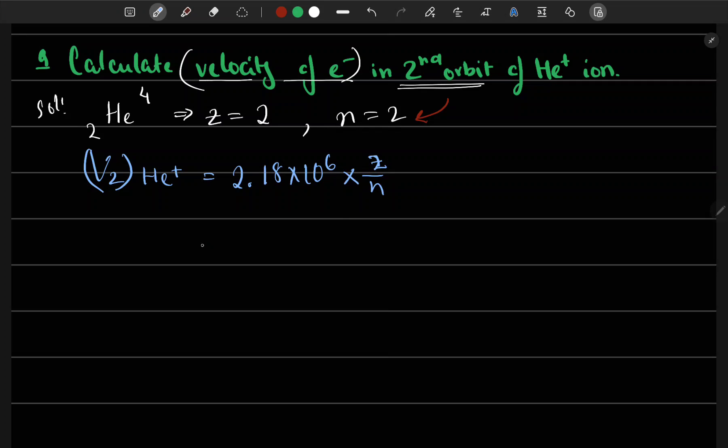So now this is equal to 2.18 into 10 to the power of 6, into Z we have 2 here, and n we have 2, so 2 by 2 is 1. This gives us 2.18 into 10 to the power of 6 meter per second. That was it.